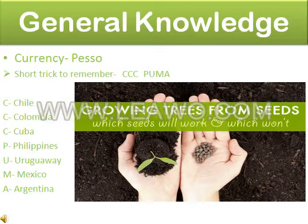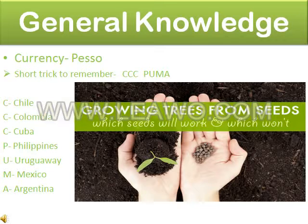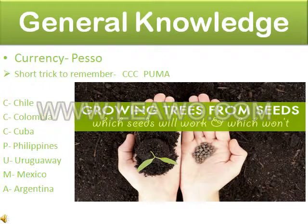The next currency is Peso, and the short trick is 'Triple C PUMA': the first C is Chile, second C is Colombia, third C is Cuba, P is Philippines, U is Uruguay, M is Mexico, and A is Argentina.